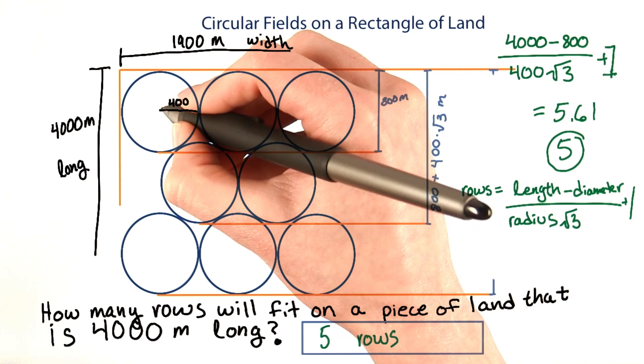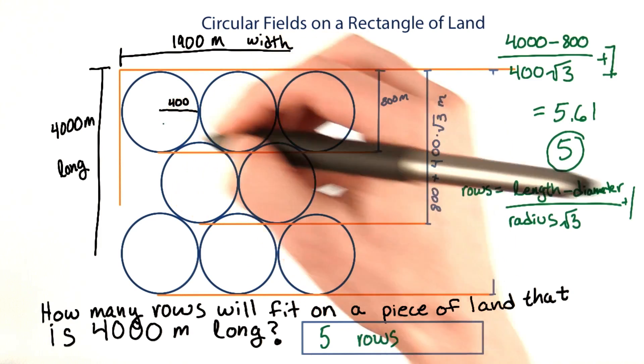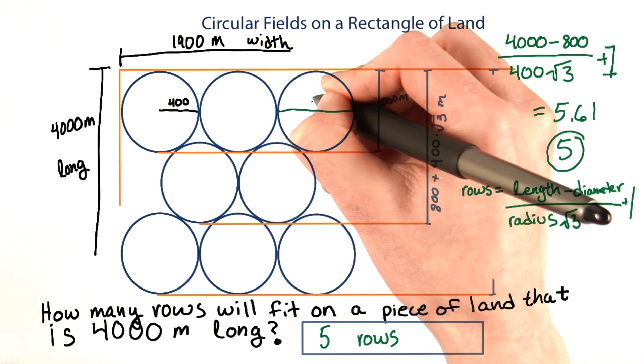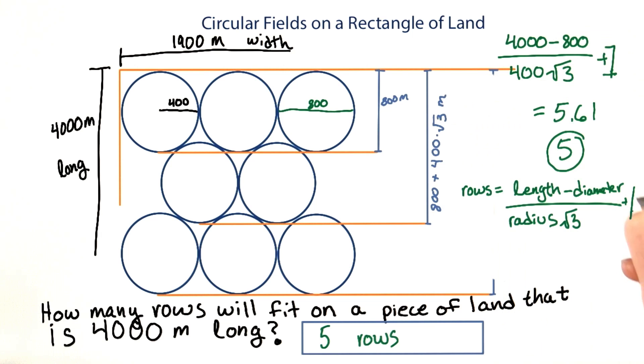Remember, the radius was the 400, and diameter would be two radiuses, or 800. And then once we do this calculation, we would drop the decimal. Save this. You're going to need it later.